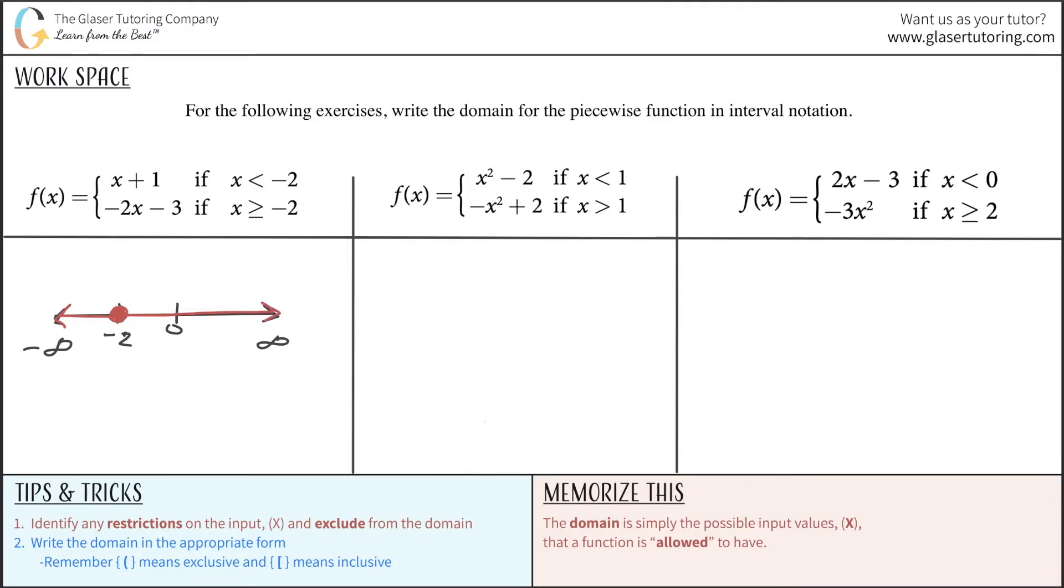If you notice, it's all real numbers. The domain of this thing is now going to be from negative infinity all the way to positive infinity. And I use the bracket because that means exclusive. You can't include infinity. It's not a number, it's an idea.